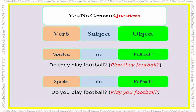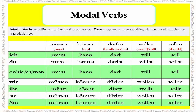Now we will form a basic yes/no German question. Notice that this time the verb is in front of the sentence and the subject is in the second position — verb and subject are interchanged. The first question is 'spielen sie Fußball?' meaning 'do they play football?' The second sentence is 'spielst du Fußball?' meaning 'do you play football?'